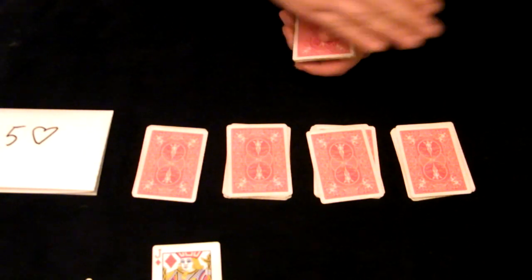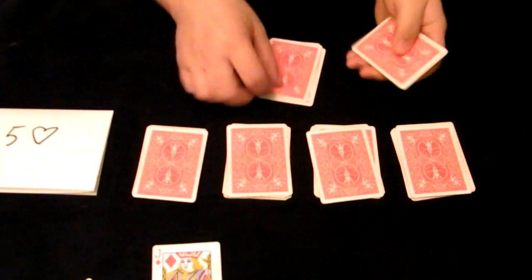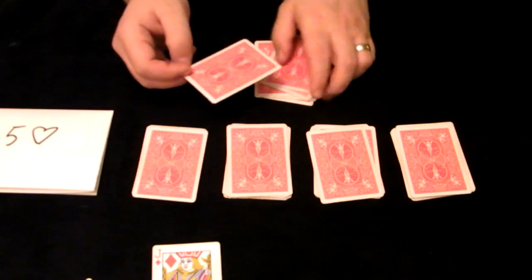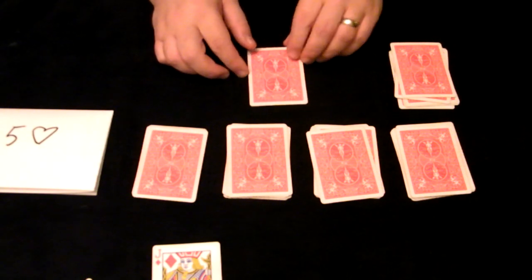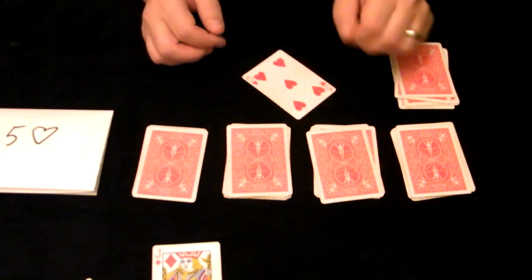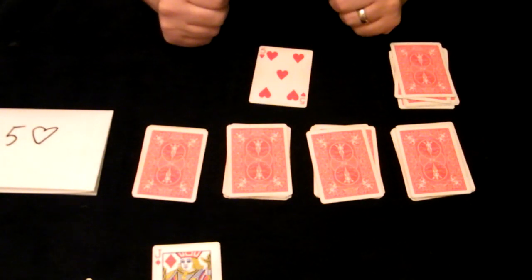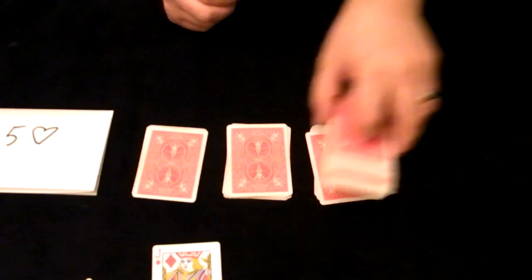And lastly, again, we're going to spell the word magic for our magic card. M-A-G-I-C. And this last card on C, strangely enough, will have found itself to be the magic card, the five of hearts in my case. And it should be your magic card. So I hope you enjoyed that and we'll see you again next time.